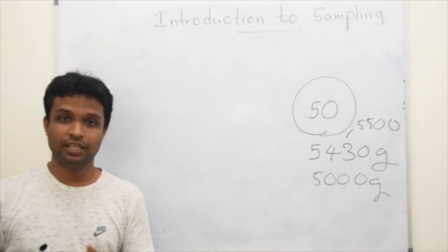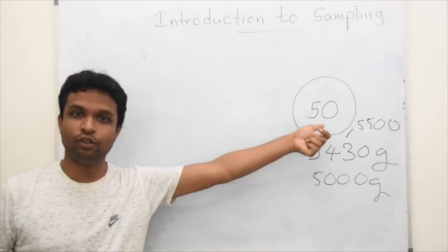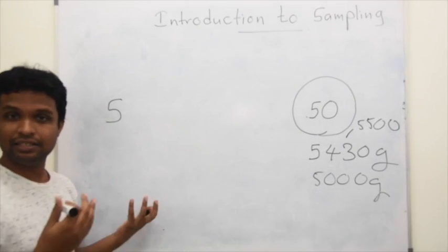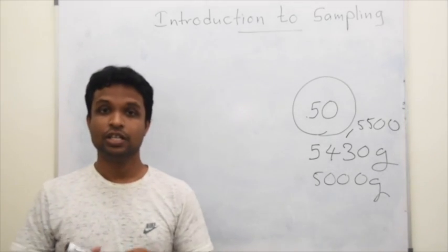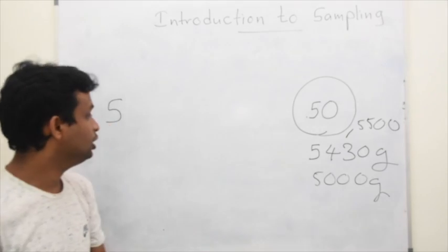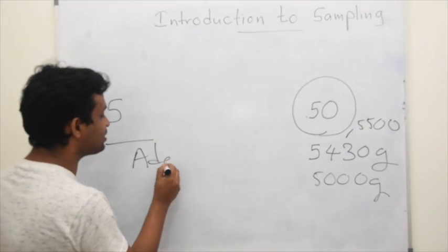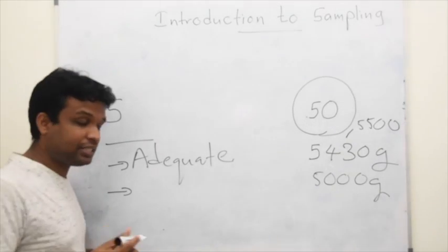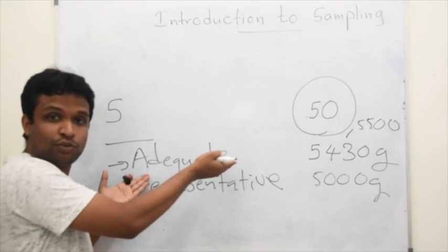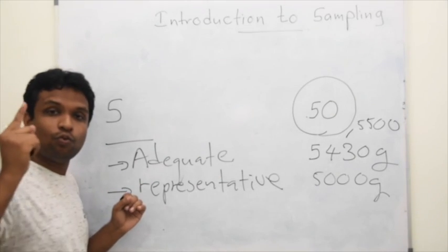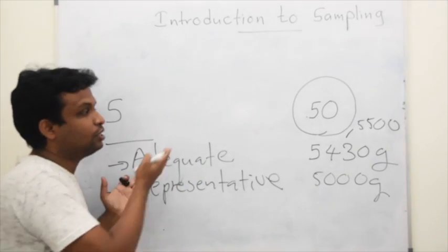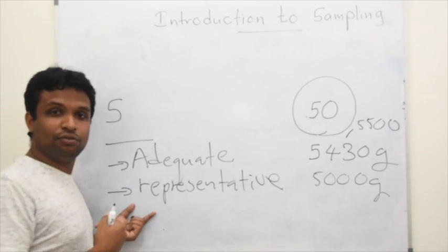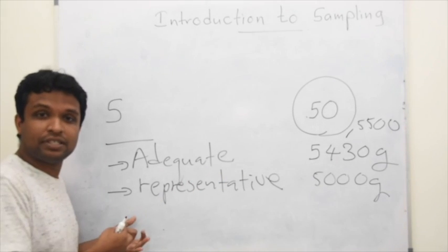What we need is to take a representative sample of those 50. You may take about 5 individuals including both children and adults and go for the estimation. When taking a sample, you need to take an adequate sample size. Without taking just one individual, you can take 5 to 10 individuals to estimate the requirement of 50 — which we call an adequate sample.